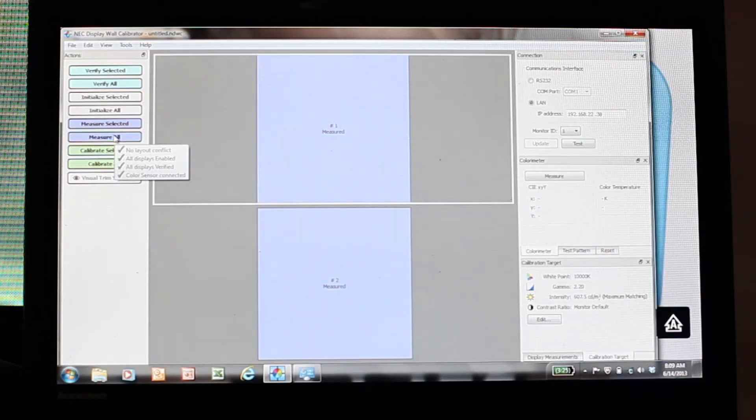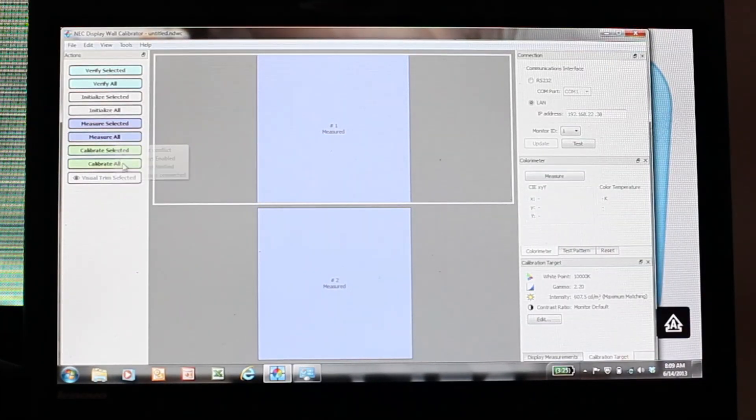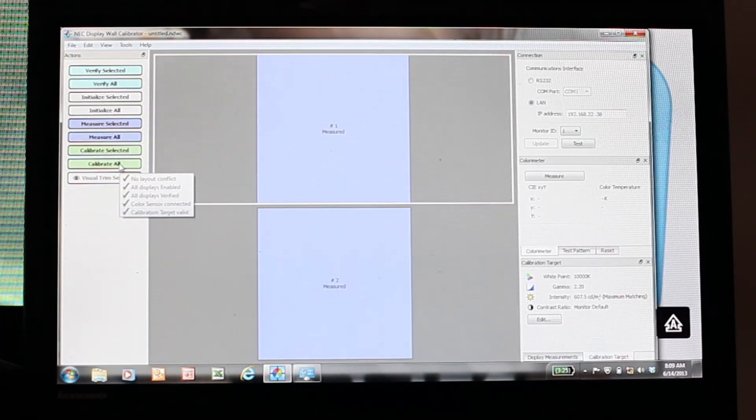Then the final step is going to be to calibrate all the units. This is the step that I'm going to show you right now. Again, a bunch of test patterns are going to appear on the screens themselves, and then we're going to utilize our color sensor to communicate with the software itself and actually calibrate the displays.